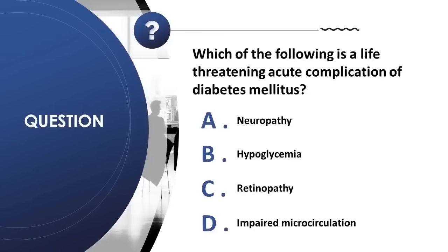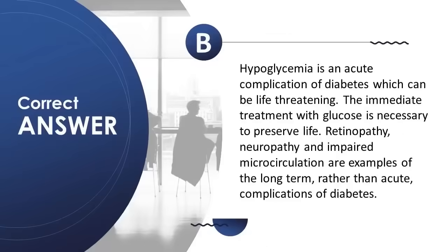Question 36: Which of the following is a life-threatening acute complication of diabetes mellitus? A) neuropathy, B) hypoglycemia, C) retinopathy, D) impaired microcirculation. Correct answer is B. Hypoglycemia is an acute complication of diabetes that can be life-threatening; immediate treatment with glucose is necessary to preserve life. Retinopathy, neuropathy, and impaired microcirculation are examples of long-term, rather than acute, complications of diabetes.